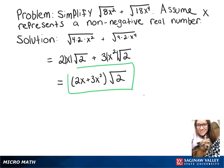And then we can take off our absolute value signs, because the directions state that x is a non-negative real number.